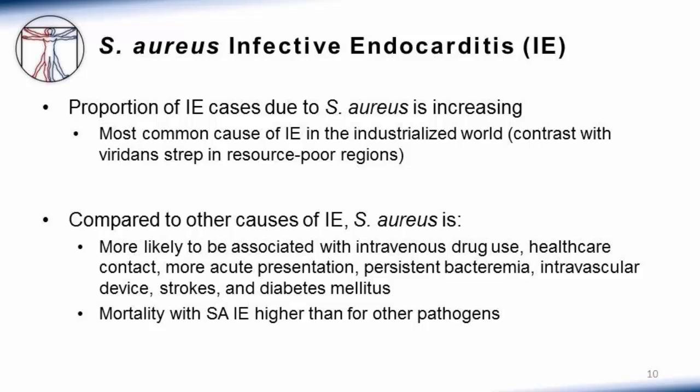Staph aureus endocarditis is distinct from endocarditis caused by other organisms. It's more likely to be associated with intravenous drug use, healthcare contact, underlying diabetes mellitus, and intravascular devices. Once it develops, it tends to present acutely in keeping with the virulence of this pathogen and is associated with persistent bacteremia — patients may have positive blood cultures day after day, or even week after week, despite appropriate therapy. It is more likely to lead to complications such as strokes, and mortality with staph aureus endocarditis is higher than for other pathogens that cause endocarditis.